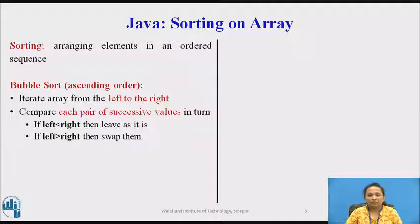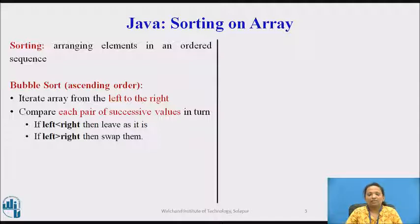The basic logic of bubble sort is that the array is scanned from left to right, in which each pair of successive values are compared. For ascending order sorting, if the left element is smaller than the right element, do not swap these elements. Otherwise, if the left element is greater than the right element, swap the elements. This will be repeated for n iterations, where n is the total number of elements in the array.